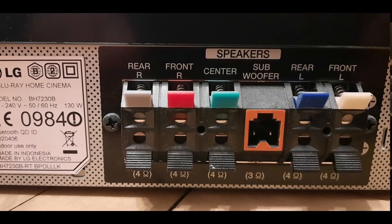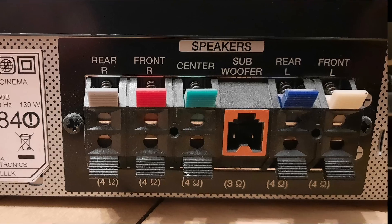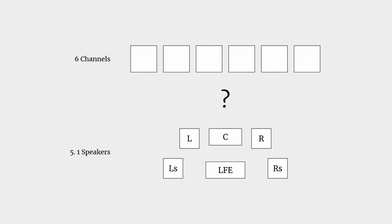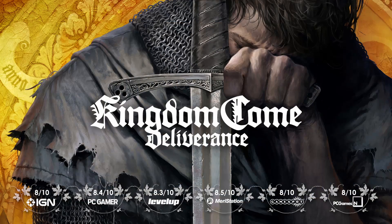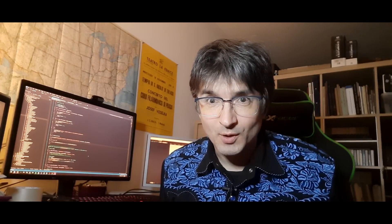Most multichannel audio devices usually come with labels that show which output should go to which speaker. Unfortunately, this information sometimes is not present in some commonly used multichannel audio files. This video is a tale of a near miss: when making Kingdom Come Deliverance, we almost delivered the music in half of the cutscenes in the wrong 5.1 channel order.